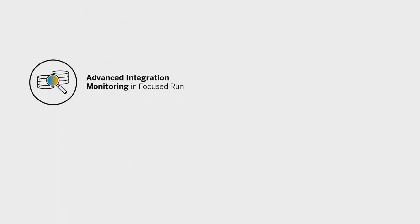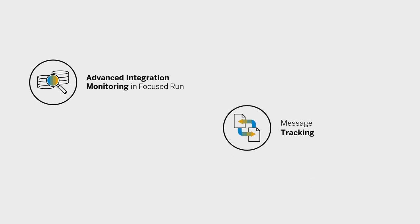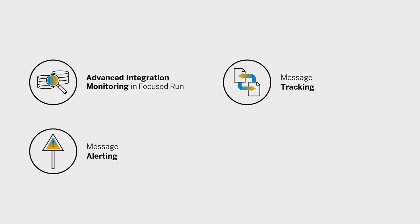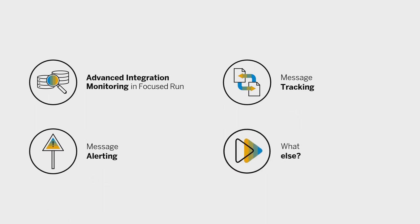In this video, you have learned about the monitoring and reporting use cases supported by Advanced Integration Monitoring in Focused Run. You know about the main features — Process Orchestration monitoring, message tracking, and message alerting — and you got an overview of which other on-premise categories and cloud services you can manage with Advanced Integration Monitoring in Focused Run.